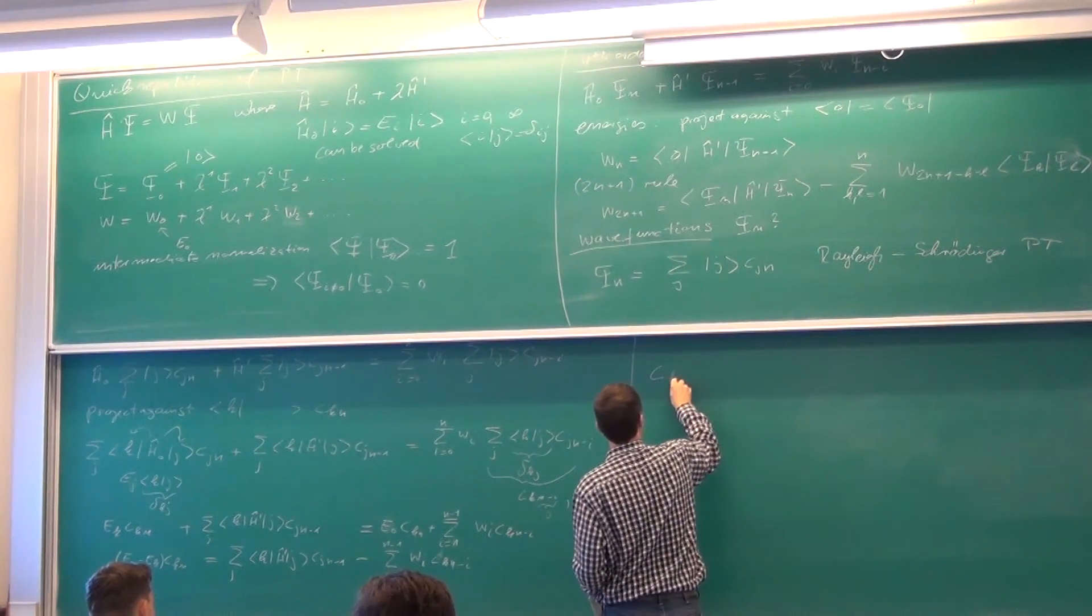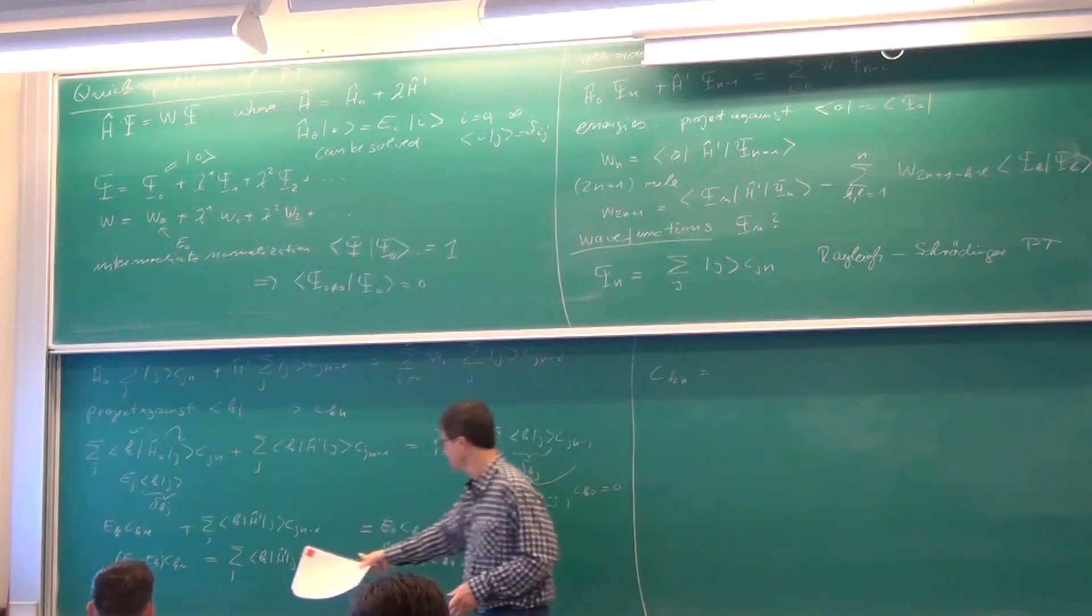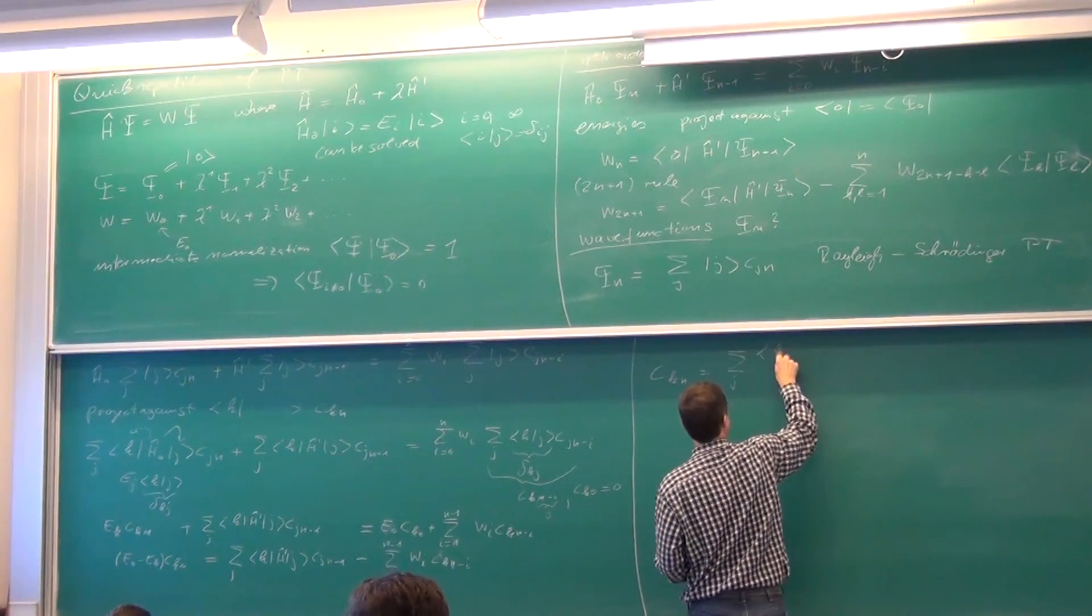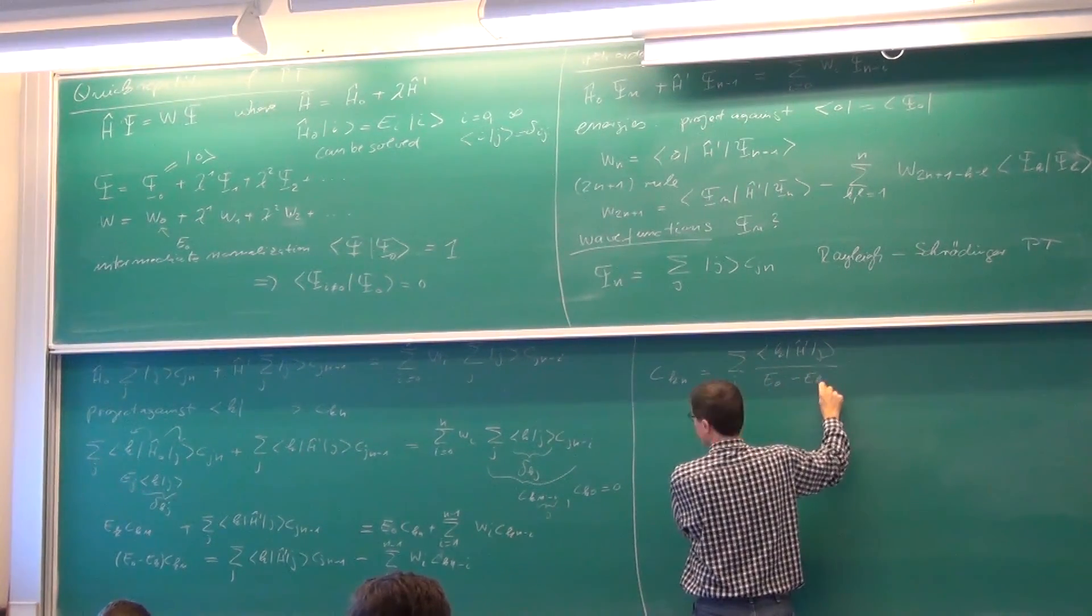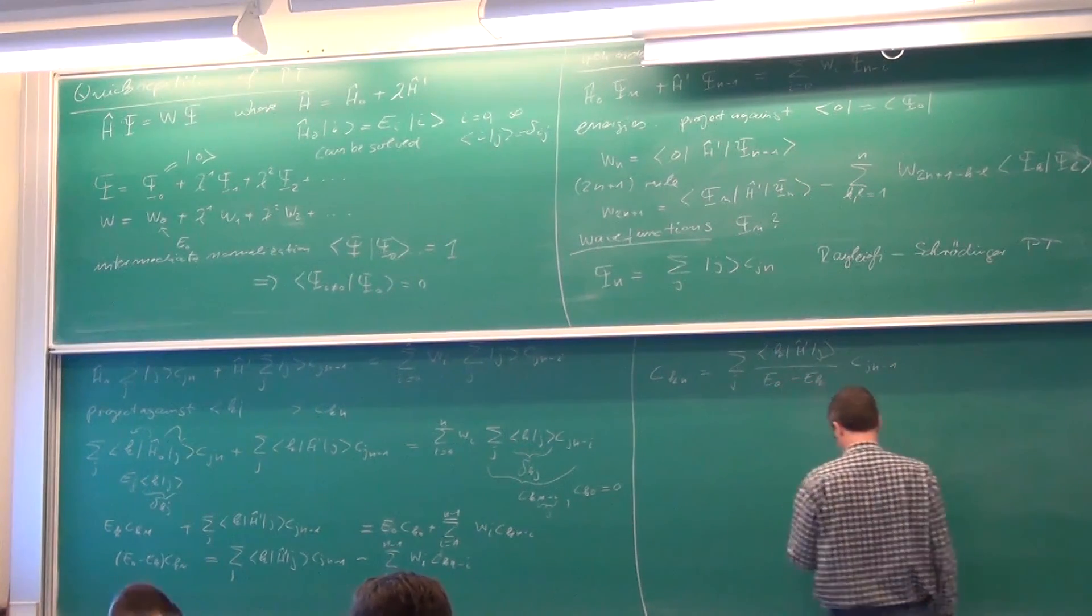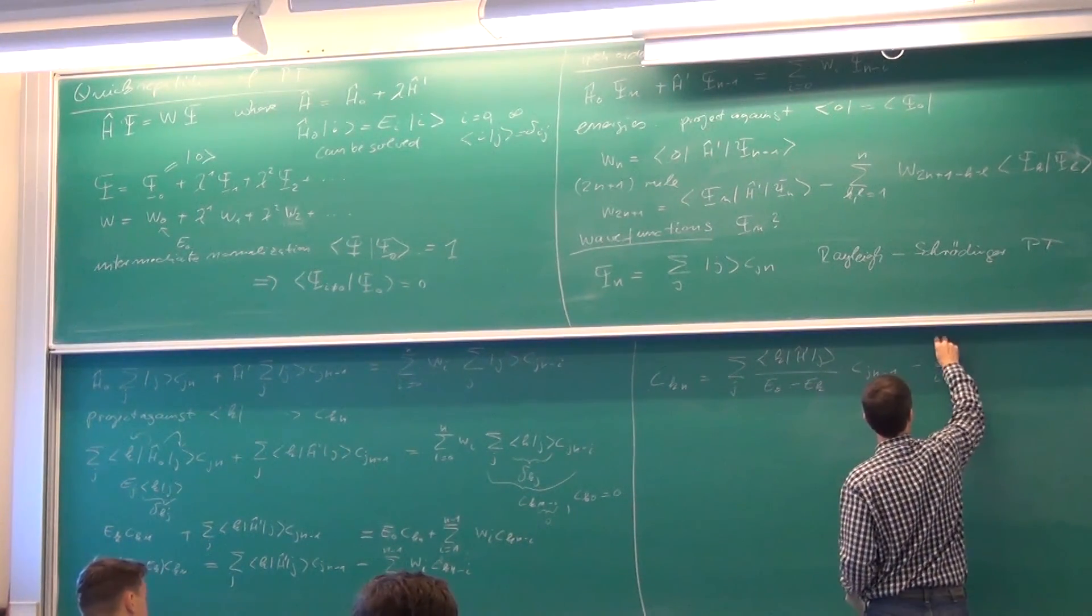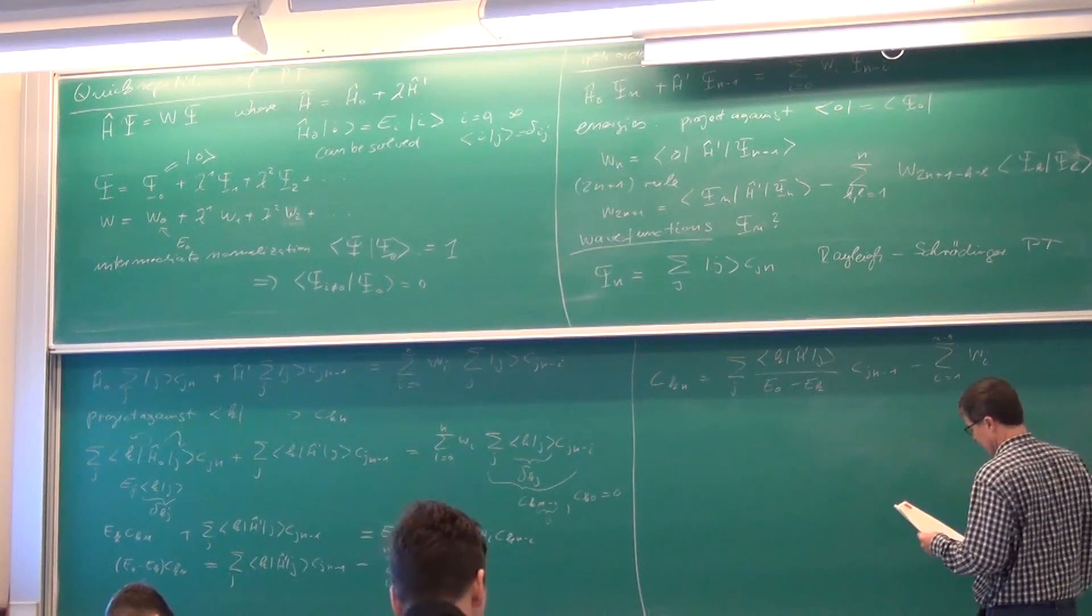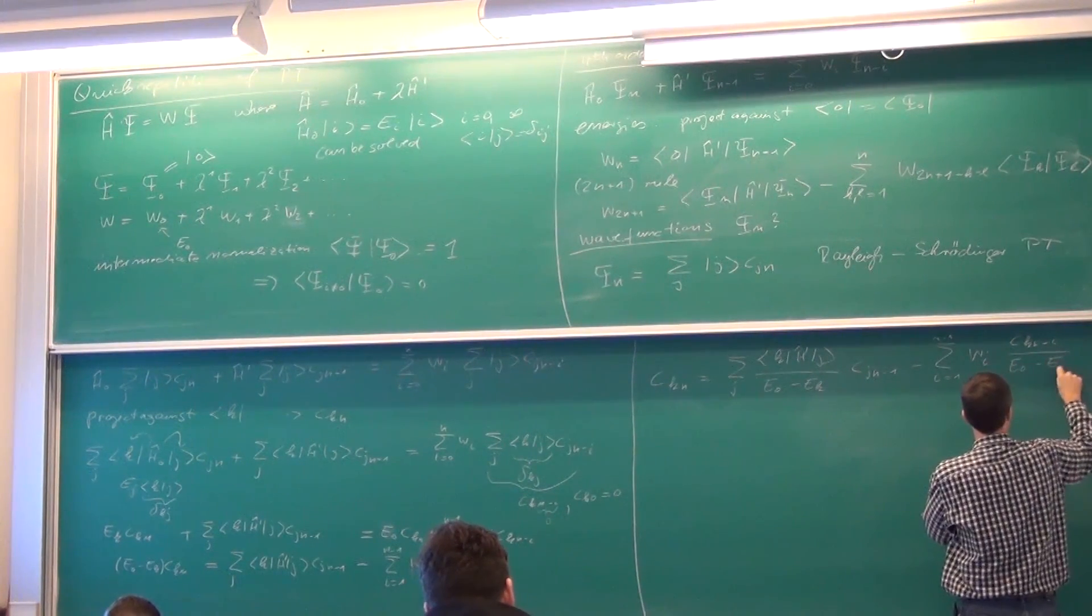Which is C, K, coefficient of the basis state K, in the nth order wave function. Is then a sum over, this, a sum over J. Of, K, H prime, J, divided by E0 minus EK, times C, J, N minus one. Minus a sum over orders I from one to N minus one. The corresponding energy, WI, times a lower order coefficient divided by E0 minus EK.